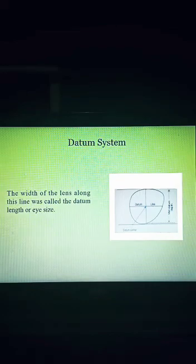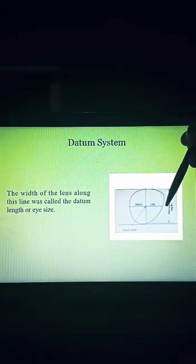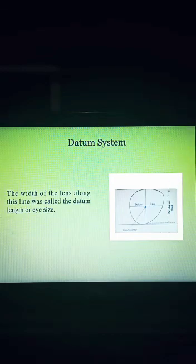Next, the width of the lens along this line was called the datum length or eye size. Width of the lens from here to here, this is called datum length or eye size.